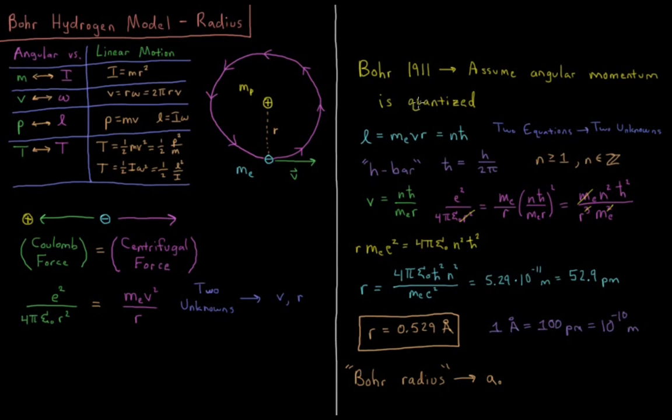Once again, we have a quantum hypothesis generating our second equation for two equations, two unknowns. Now this is an equation which has MvR equals nℏ. We know ℏ, we know n, and we know Me. So now we have two equations with v and r, and we can solve for the value.